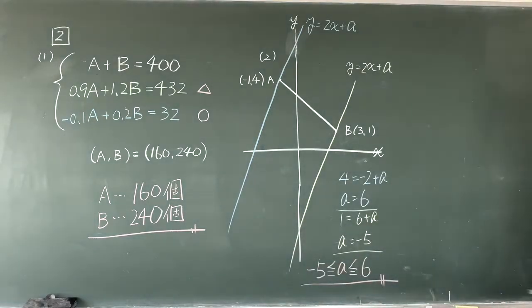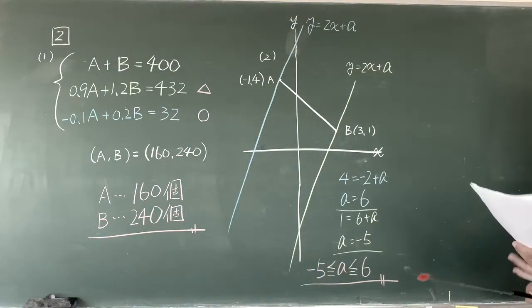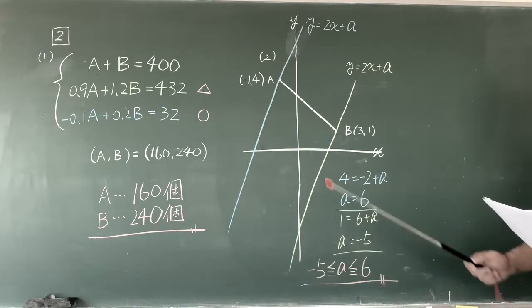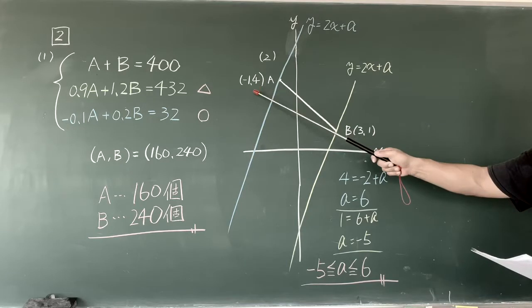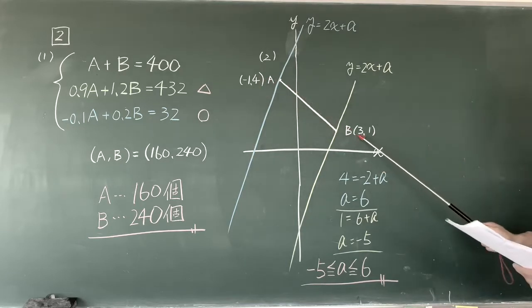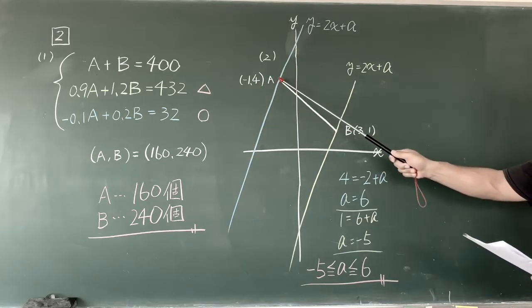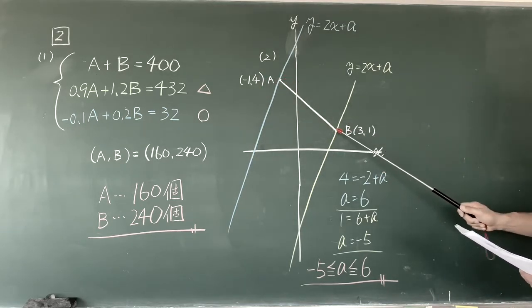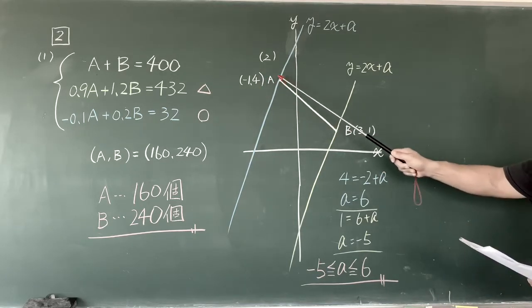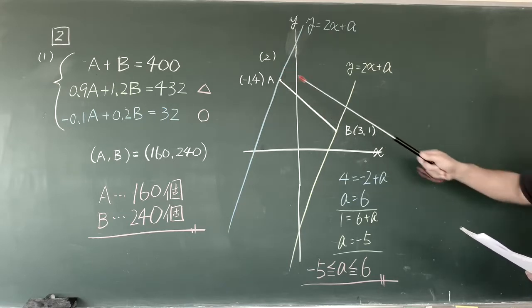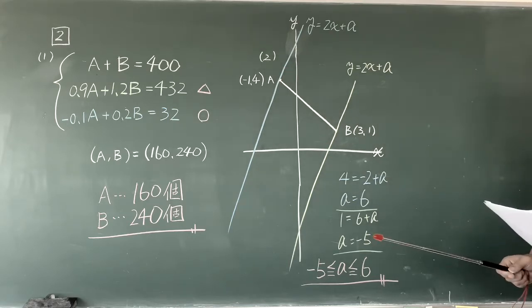連立方程式を解いてもらうと、160、240と。Aが160個、Bは240個という答えになります。次、関数ですね。2点、(-1,4)、(3,1)を通る線分AB。線分ですから、ここからここまでですね。